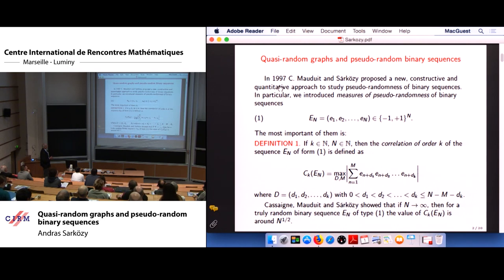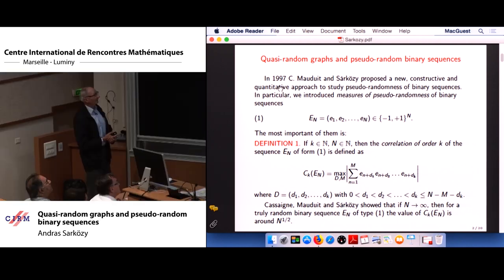In 1997, Christian Mauduit and I proposed a new constructive and quantitative approach to study pseudo-randomness of binary sequences. There are many definitions of pseudo-randomness of binary sequences, many approaches. The one that I will present here is the one that is needed for giving explicit constructions for graphs with pseudo-random properties.